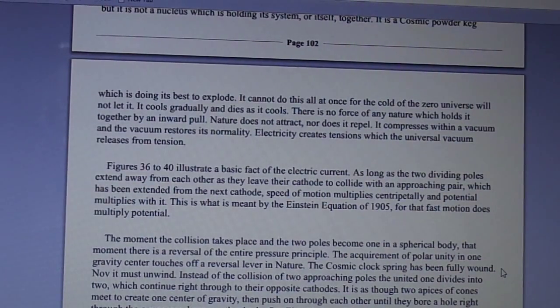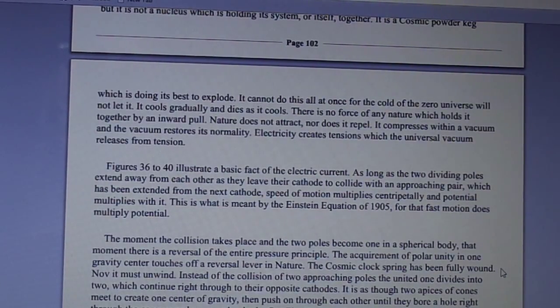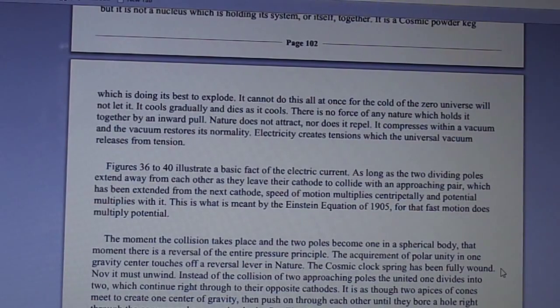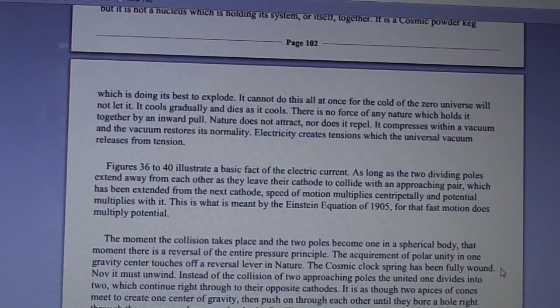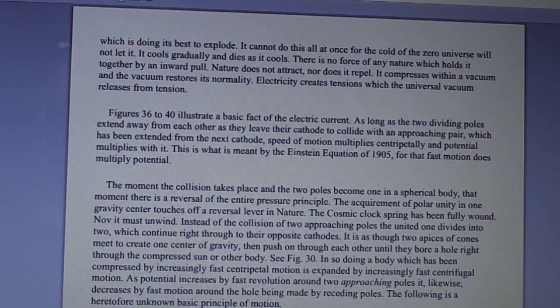Figures 36 to 40 illustrate a basic fact of the electric current. As long as the two dividing poles extend away from each other as they leave their cathode to collide with an approaching pair which has been extended from the next cathode, speed of motion multiplies centripetally and potential multiplies with it. That is what is meant by the Einstein equation of 1905, for that fast motion does multiply potential. The moment the collision takes place and the two poles become one in a spherical body, that moment there is a reversal of the entire pressure principle. The acquirement of polar unity in one gravity center touches off a reversal lever in nature.